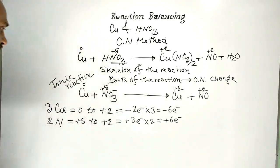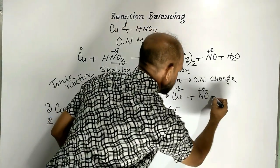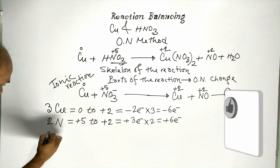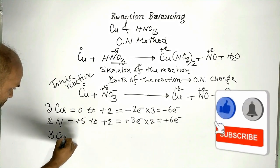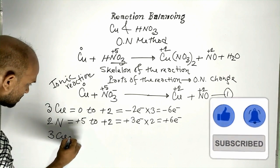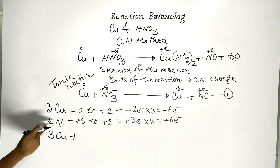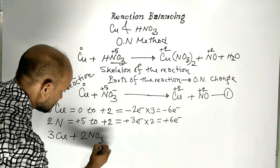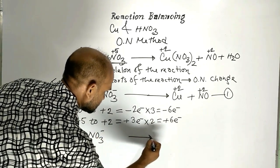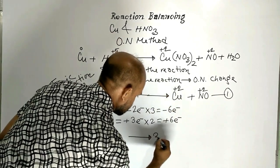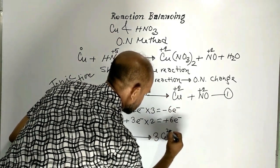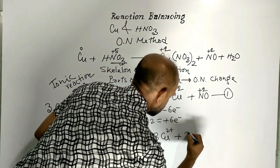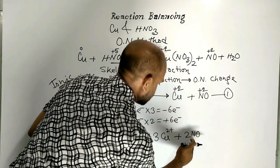Now let us write equation number 1 from this. On the left side: 3 copper plus 2 nitrate ions. On the right side: 3 copper²⁺ plus 2 nitric oxide.